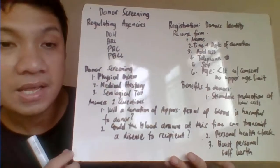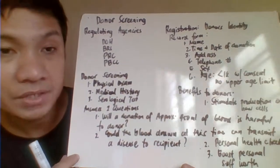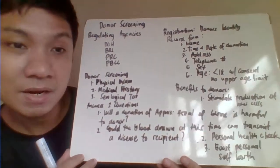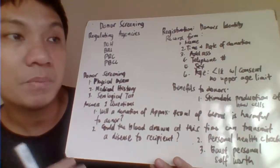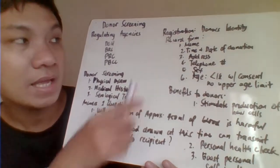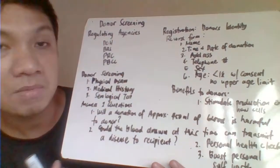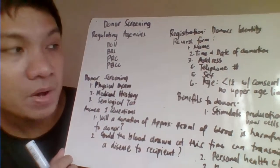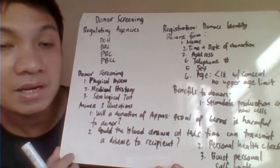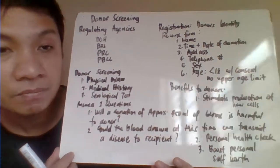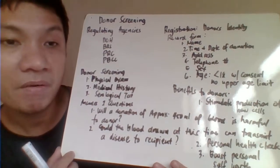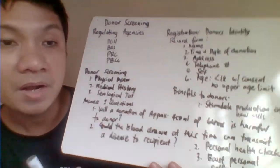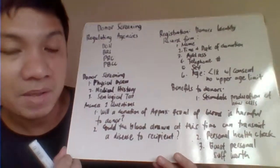We also require registration, where you get the necessary information from the donor including personal information such as name, time and date of collection, address, telephone number, sex, and age. This personal information becomes part of the patient's record.